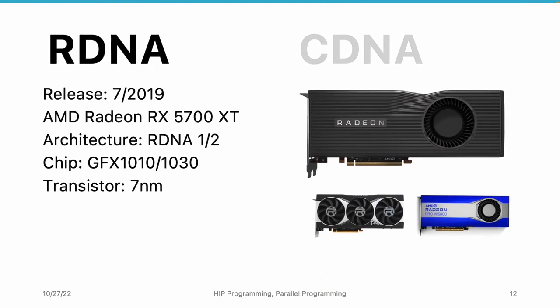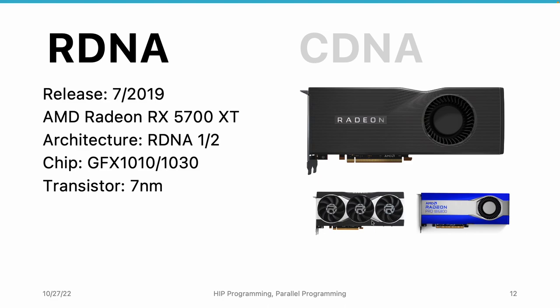The first RDNA product was released in July 2019 and named the RX 5700 XT GPU. The architecture is RDNA 1, and the chip is named GFX1010. The first '10' is the major generation number — the 10th generation of AMD GPU. The minor version is 1 and revision is 0. The transistor size is 7nm technology. Later, by supporting new features, AMD released the RDNA 2 GPU represented by the RX 6800 XT and the AMD Radeon Pro W6800.